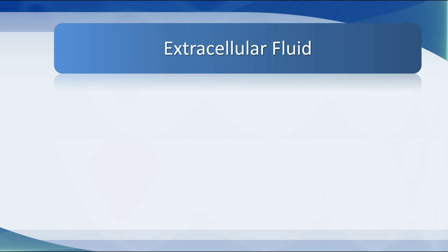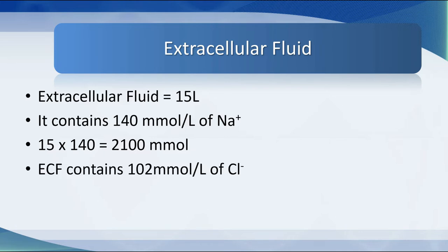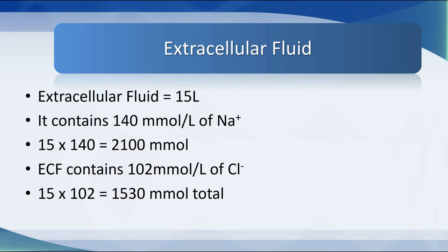Extracellular fluid in most human beings is approximately 15 litres — it can vary between 10 and 20 litres. It contains about 140 millimoles of sodium. Working that out: 140 millimoles per litre times 15 litres gives about 2,100 millimoles of sodium in the extracellular space. It also contains 102 to 105 millimoles per litre of chloride, which over 15 litres works out at about 1,530 millimoles — so roughly 2,000 millimoles of sodium and 1,530 millimoles of chloride.